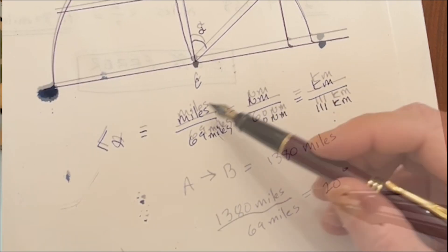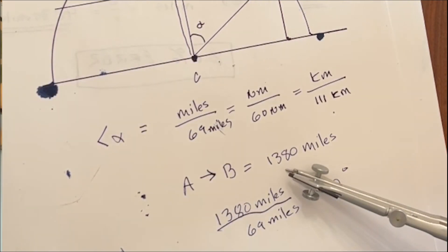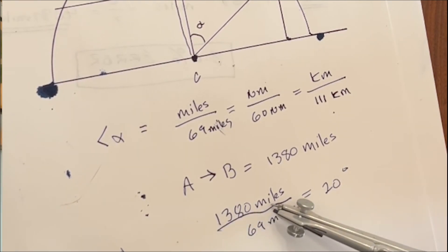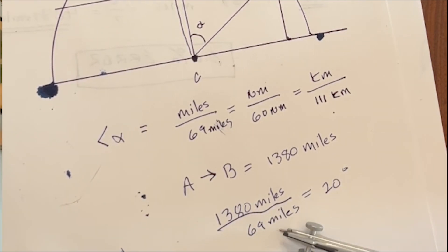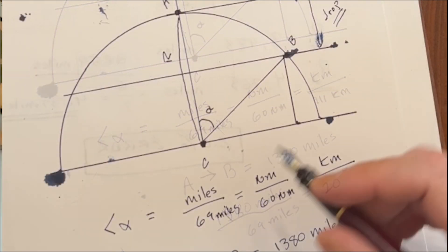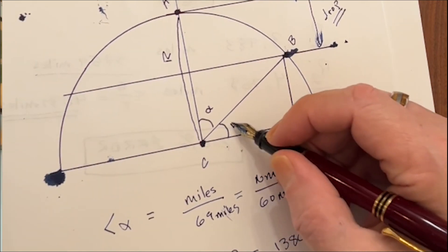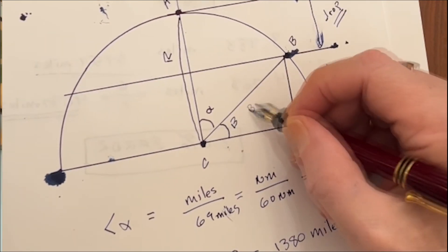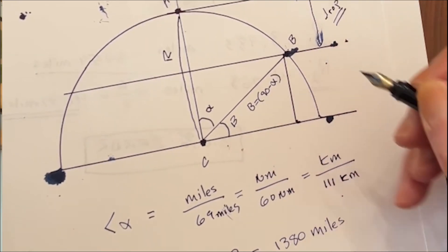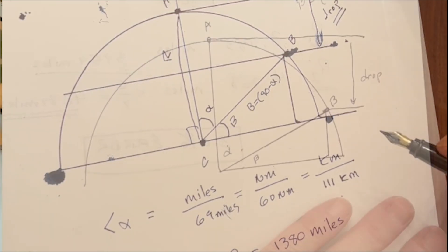Keep your units the same. Our first step is to figure out how far our distance is in degrees: angle alpha equals miles divided by 69, nautical miles divided by 60, or kilometers divided by 111. We'll say the distance between A and B is 1380 statute miles — dividing by 69 gives us 20 degrees. Now angle beta equals 90 minus angle alpha, because this is a right angle.